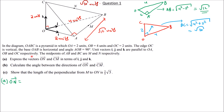Now we answer the question: vector ON. To get from O to N, we travel along OB plus BN. So vector ON equals OB + BN. OB has length 4 units in direction J, so it is 4J.